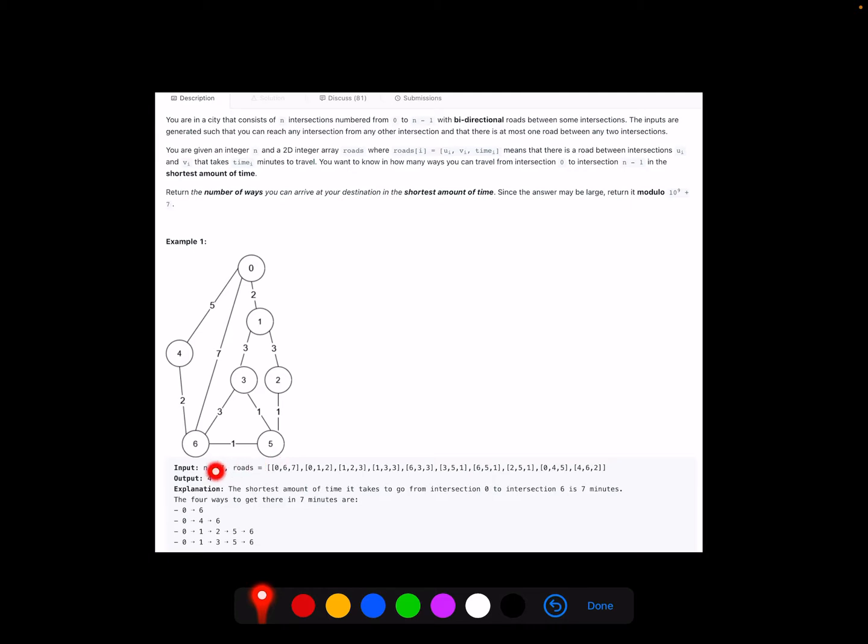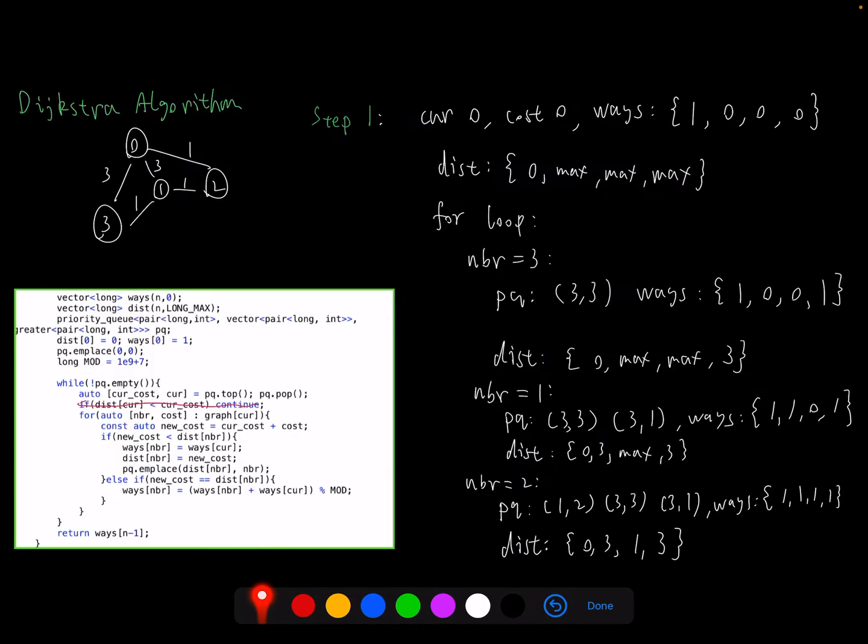Basically, there are multiple ways that may achieve the same shortest amount of time. For the first example, we have this graph here. The final output is four, which means there are four ways from zero to six to achieve the shortest amount of time. From zero to six directly, we have cost seven. And zero to four to six also has cost seven. The same for the rest of the two paths. If we look at other alternatives, like zero to one to three to six, that's eight, which is much greater than seven. For this kind of shortest path problem, you can solve this by Dijkstra's algorithm.